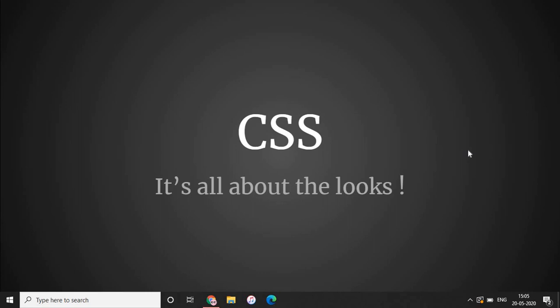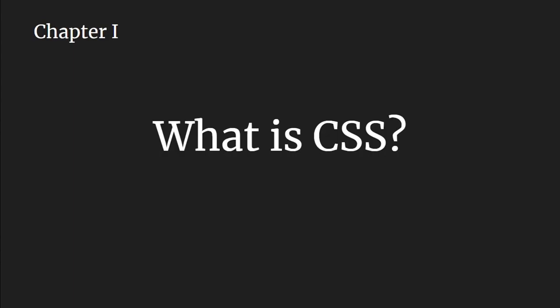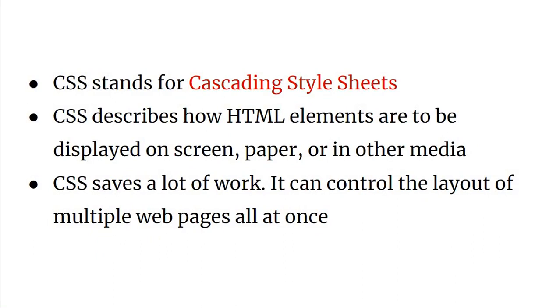We learned about HTML in our classes, so now we are going to move on with CSS. CSS stands for Cascading Style Sheets. CSS describes how elements are to be displayed on the screen, paper, or in other media. CSS saves a lot of work — it can control the layout of multiple web pages all at once. It is basically a style sheet where you give different styles to HTML elements.